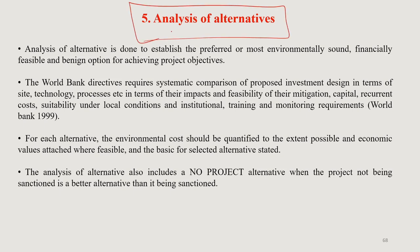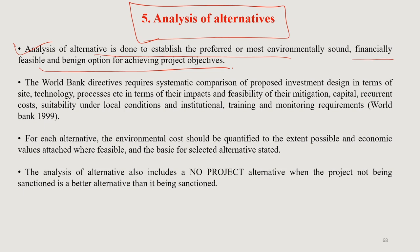Analysis of alternatives. Recalling that in MCDA we talked about choice of alternatives — this is very important. Analysis of alternatives is done to establish the preferred or most environmentally sound, financially feasible, and benign option for achieving project objectives — meaning which option impacts the environment less while also achieving the goal of the project. For that you need very sound planning.